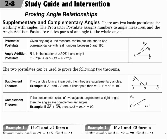This is lesson 2.8, Proving Angle Relationships. Your objectives are to write proofs involving supplementary and complementary angles, and to write proofs involving congruent and right angles.